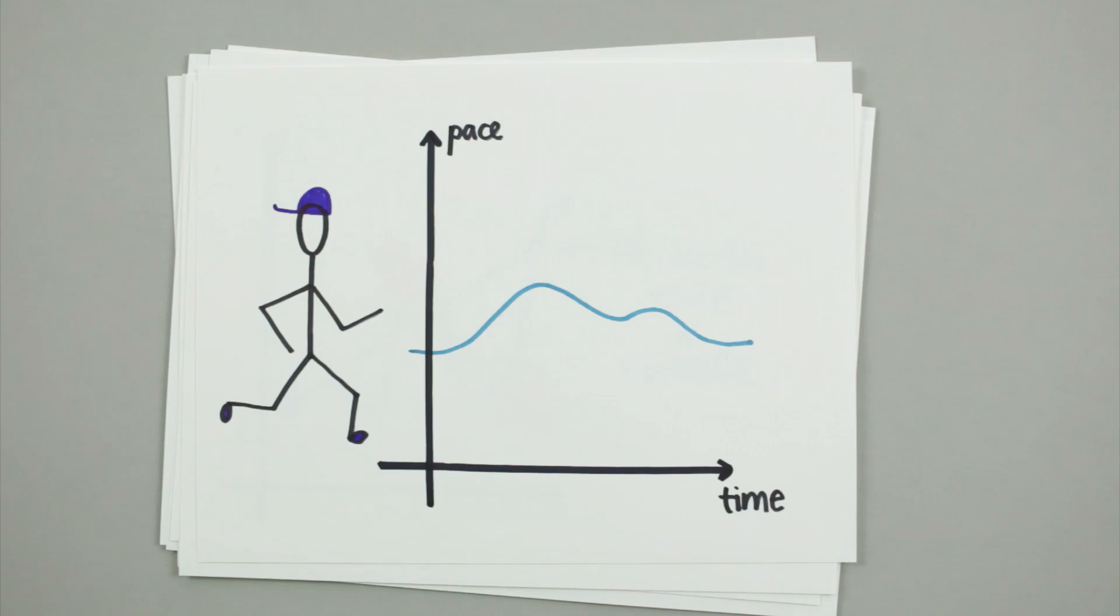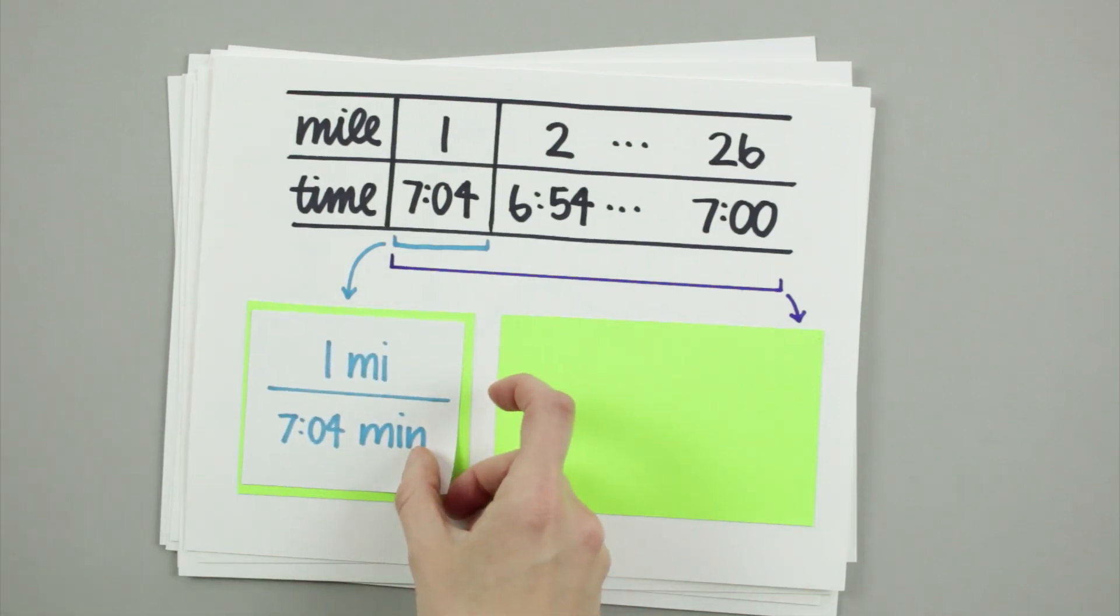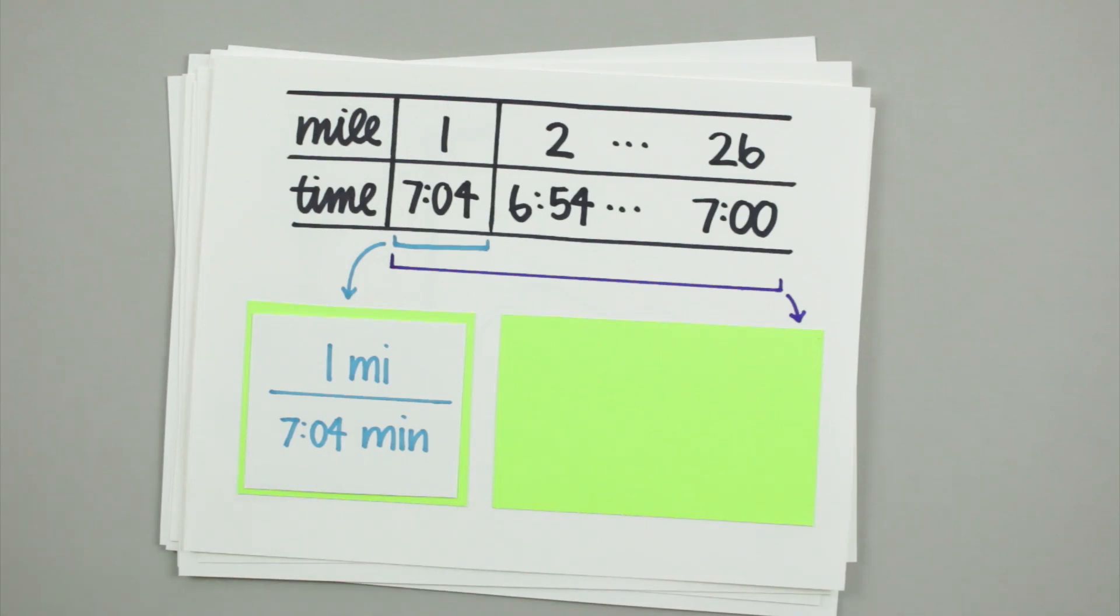Let's look at how we could figure that out. Say we're given this table of the runner's time for each mile of the marathon. We could easily find her average speed at each mile by plugging into the formula the change in distance, one mile, over the amount of time elapsed.